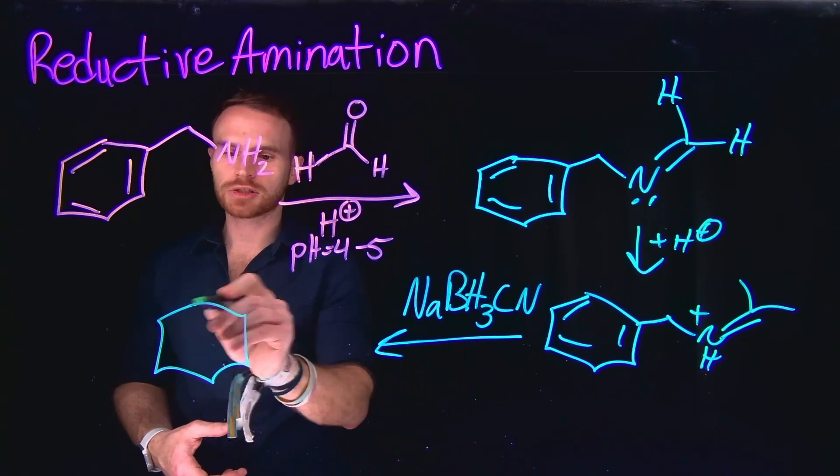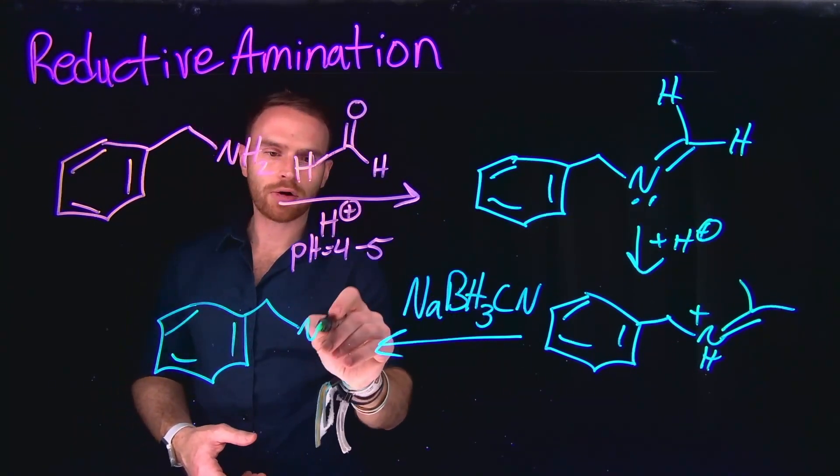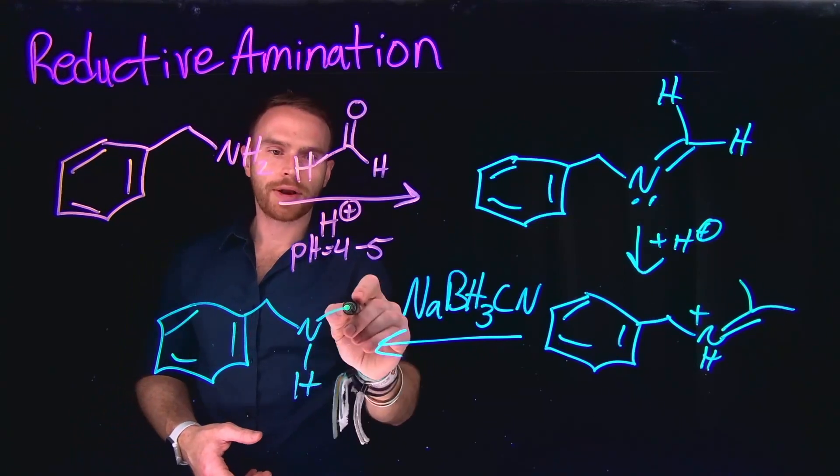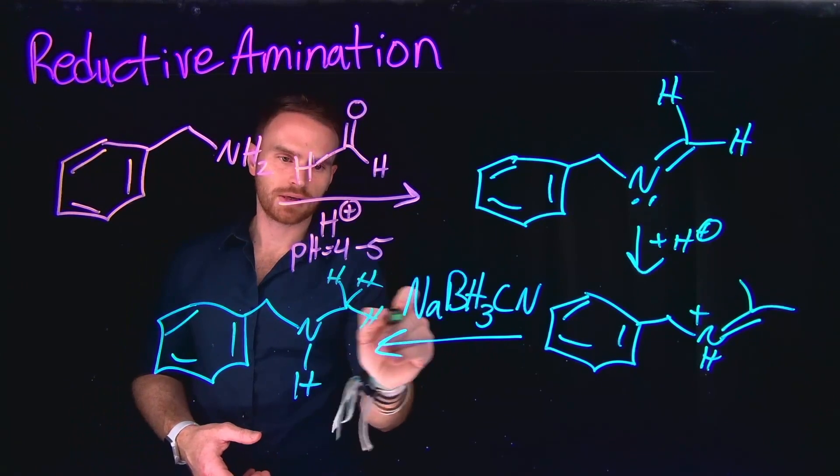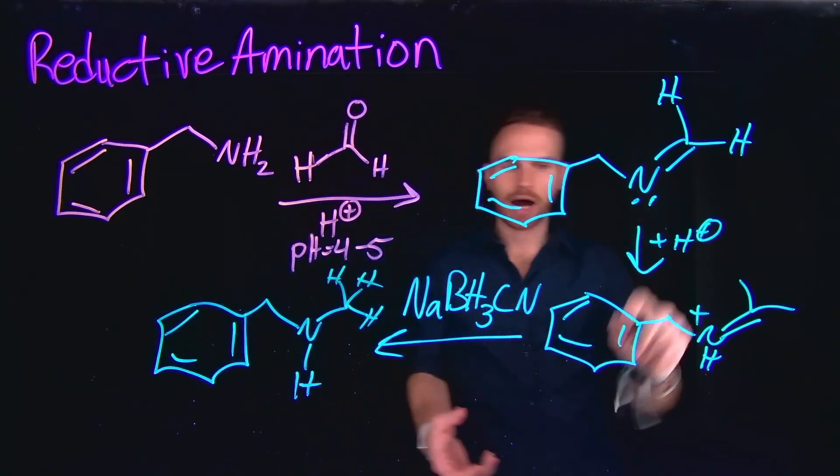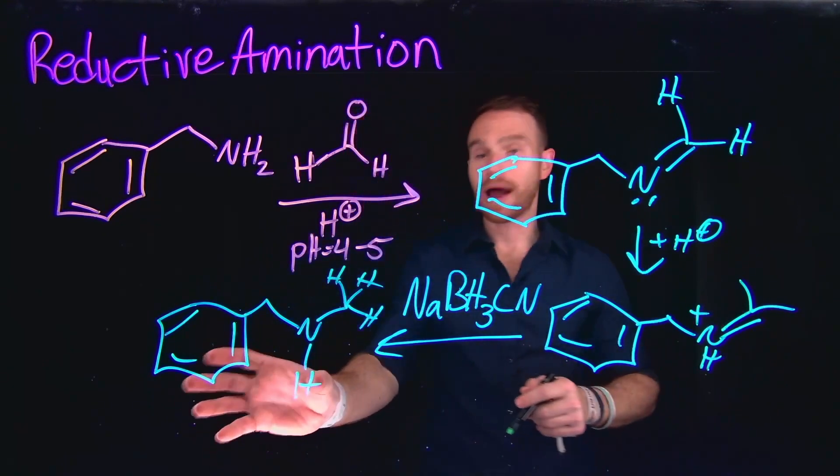And this will allow us to reduce that double bond to generate our new alkylated amine, where now we don't have any more of those double bonds. And we have reduced this by attacking one of those hydrides at this carbonyl carbon. And then now we're left with our alkylated amine.